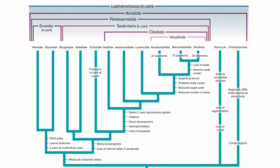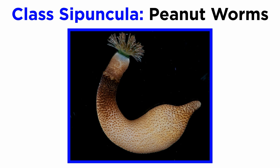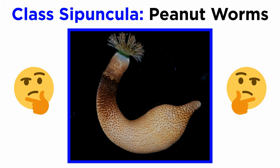Heading back to our cladogram, let's cover the marine members of phylum Annelida by going over Sipuncula, then Chaetopteridae, then Errantia, and finally the marine members of Sedentaria. Members of class Sipuncula are commonly known as peanut worms. They were once considered their own phylum, but more recent molecular work has confirmed their position as highly derived members of phylum Annelida, even though all extant species are now unsegmented.